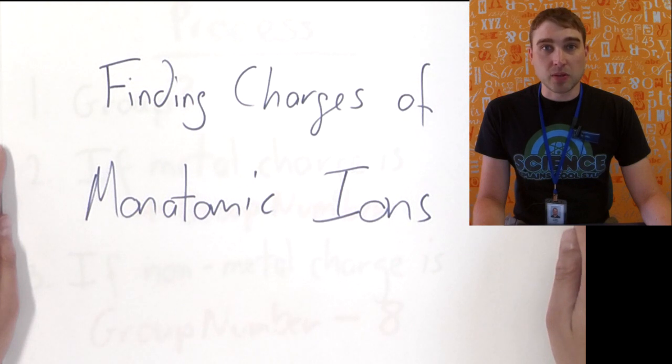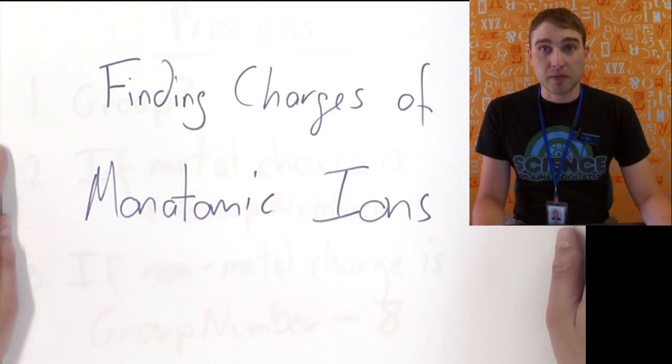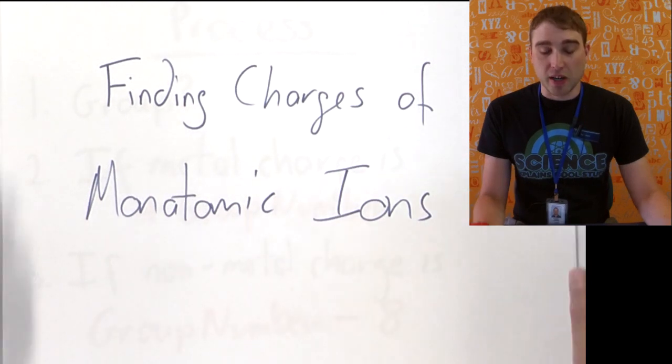Today on Flippin' Science we're going to be looking at figuring out the charges of monotomic ions. So for one atom, finding it on the periodic table and figuring out what charge the ion would be.